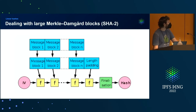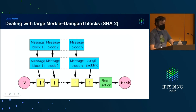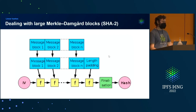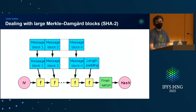This is the Merkle-Damgård construction — how SHA-2, SHA-1, and related functions work internally. There is a compressor function F and some initialization vector determined by the algorithm. You take your blocks, pad them to the right size, and basically go: IV, block, output next IV, block, output next IV, block, next IV — until you get to the end.